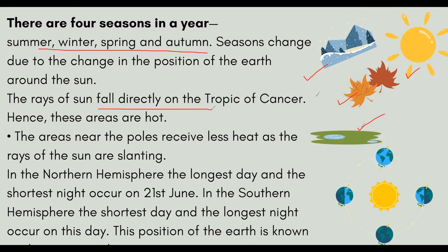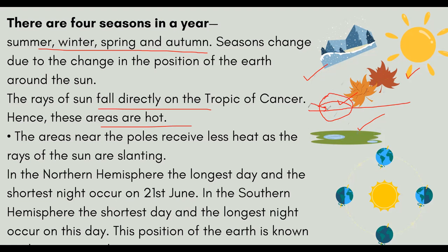Our sun rays directly fall on the Tropic of Cancer, hence these areas are hot. The Tropic of Cancer is above the equator. This is why the areas near the Tropic of Cancer receive more direct heat.